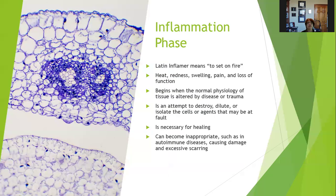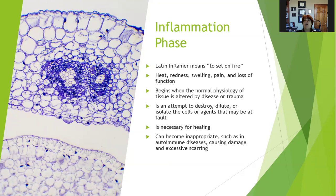During the inflammation phase — inflammation comes from the Latin word 'inflammare,' which means to set on fire. Redness, heat, swelling, pain, and loss of function are the classic signs of inflammation. It begins when the normal physiology of the tissue is altered by disease or trauma. The body has limited responses: send fluid to the area, send cells to the area, respond to those chemical messengers. So inflammation is an attempt to destroy, dilute, or isolate cells or agents that may be at fault, but it's also necessary for healing.